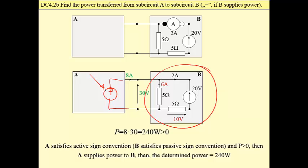That way we have completed this problem. This problem could also be solved by means of power balance. We may simply calculate power of these two resistors and of this voltage source, then add these three powers to obtain 240 watts total power absorbed by subcircuit B.